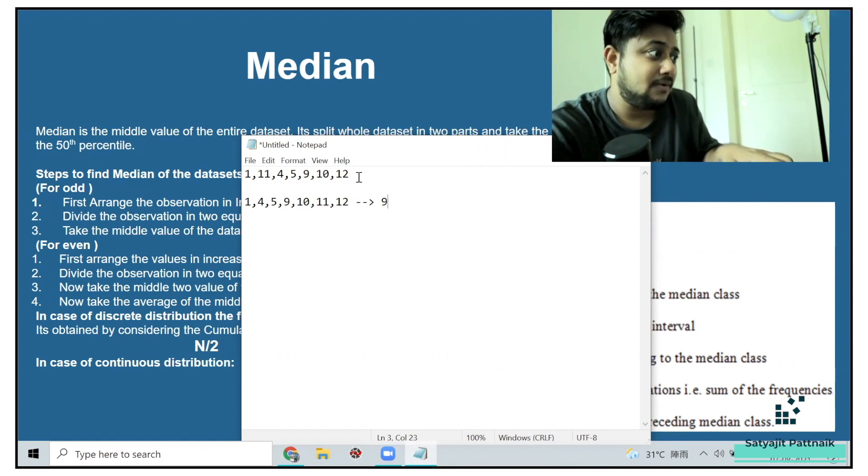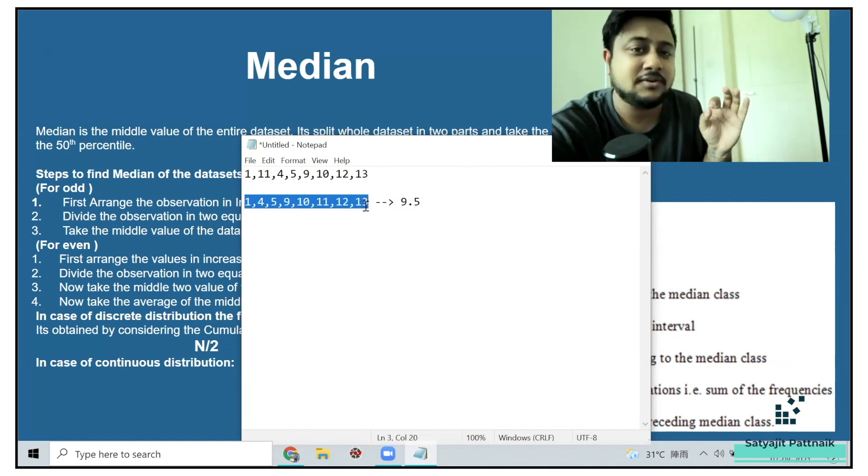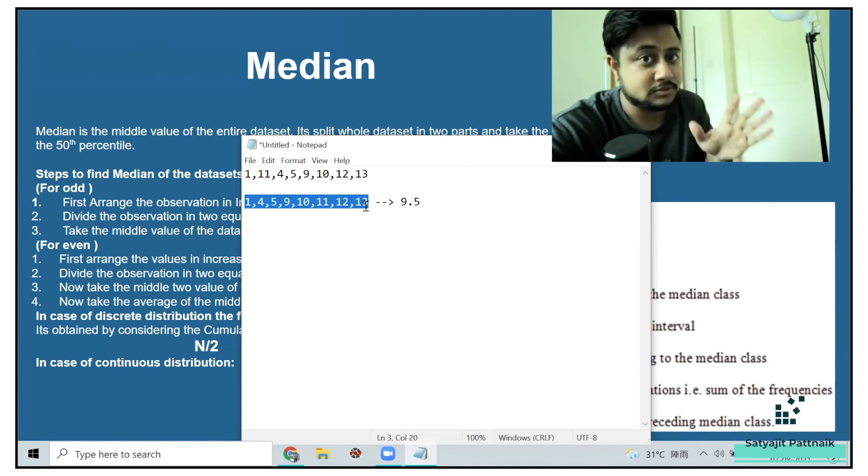What if I also have another element called as 13? So we have eight elements. So what are the middle elements? My middle elements are nine and 10. So the median is going to be nine plus 10 by two, which is going to be 9.5. And the mean value is going to be, of course, the sum of all these values divided by the total number of observations. Simple.